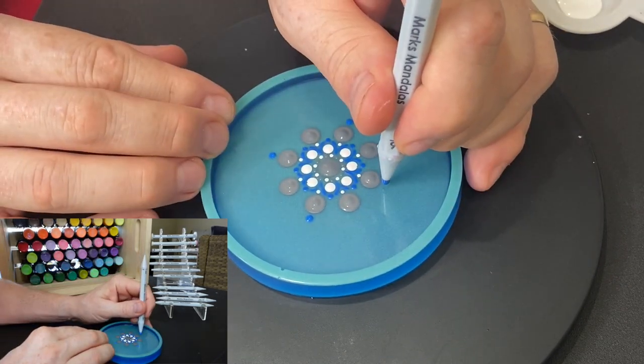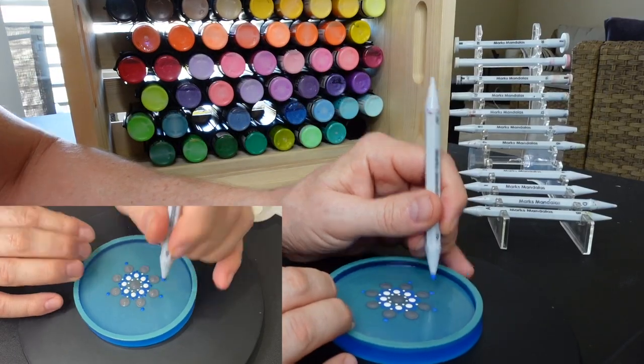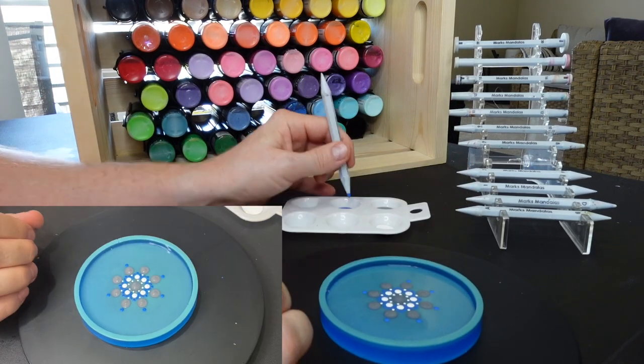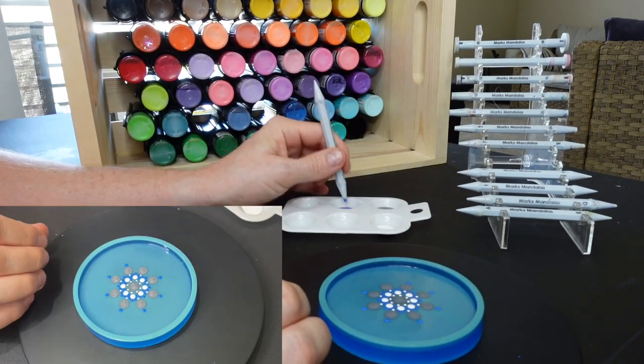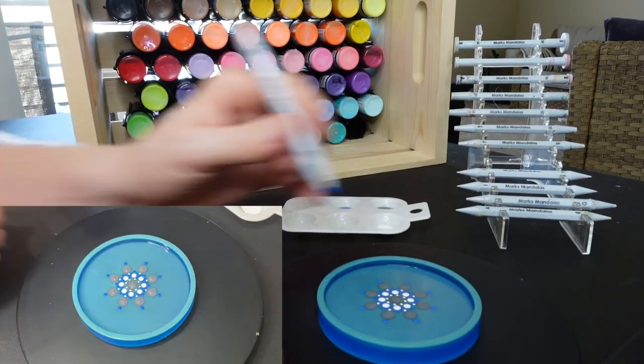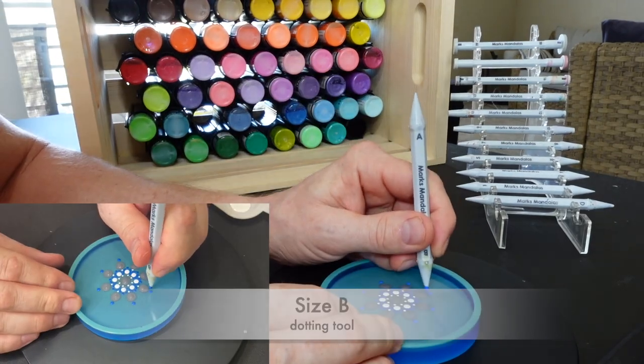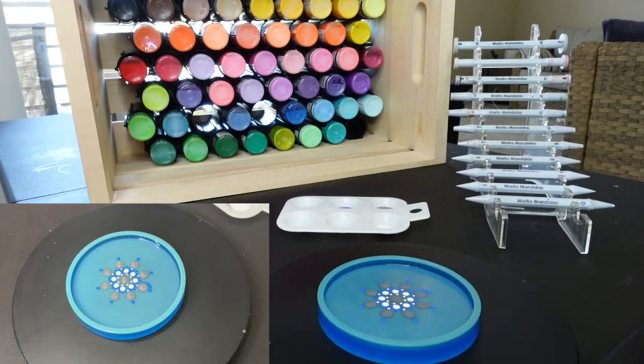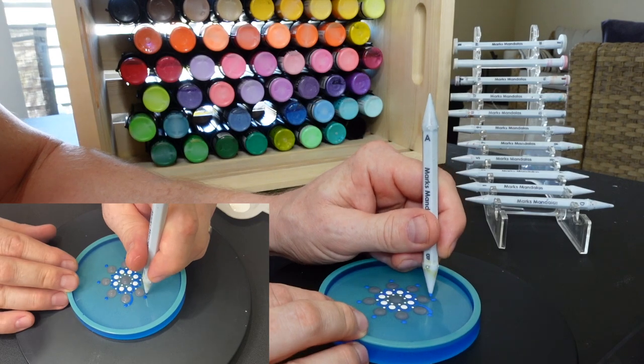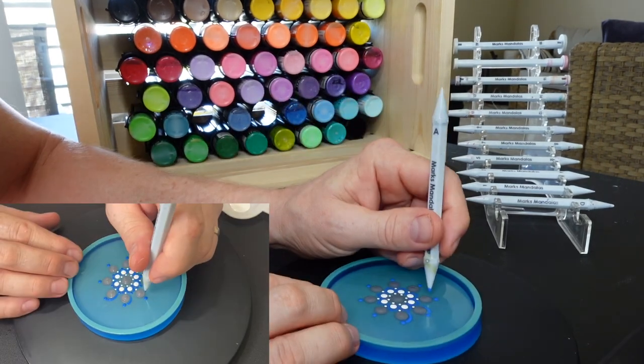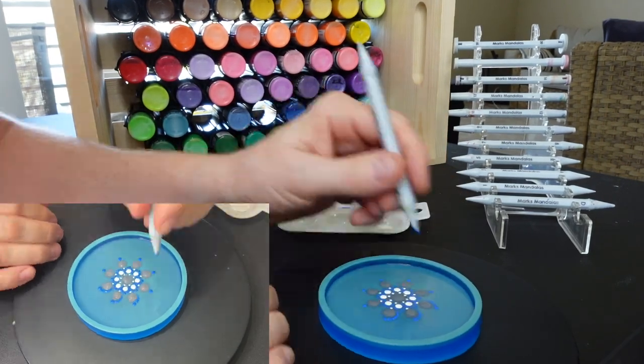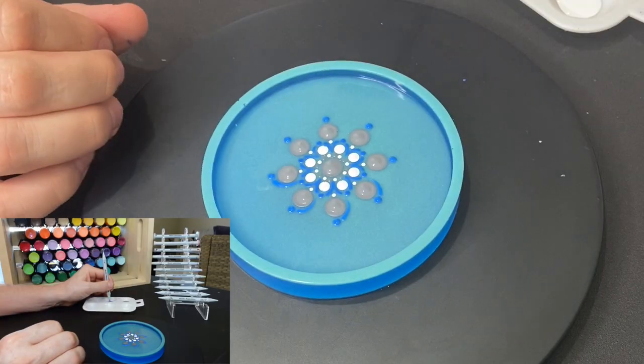And as far as the paint colors and brands I'll put them in the description below as well as links to the dotting tools I'm using. I'm using Marks Mandala's dotting tools. I will also have a link to a sheet that I put together that has some tips and visualizations.